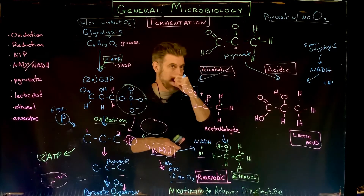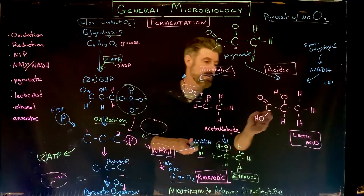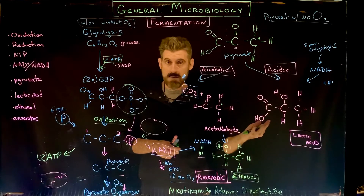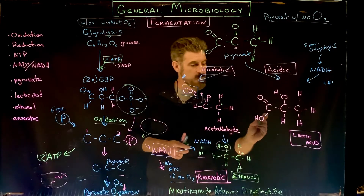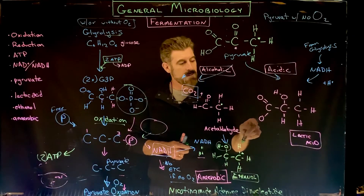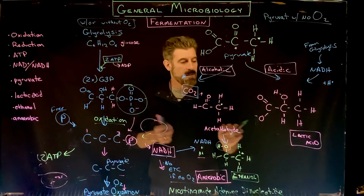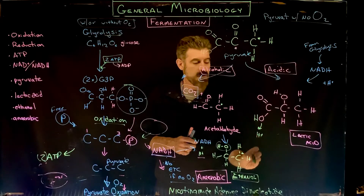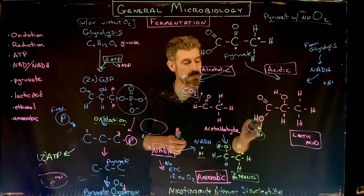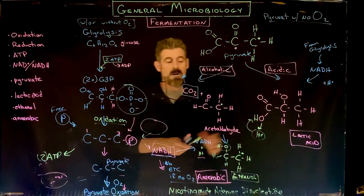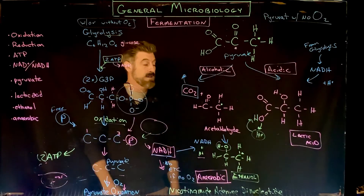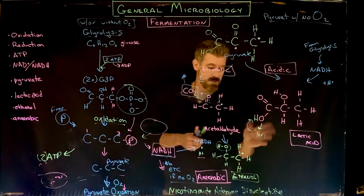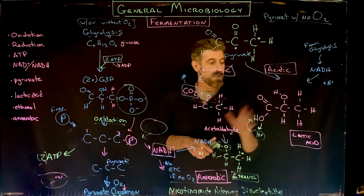It's called an acid because carboxyl groups act as weak acids - they are also called carboxylic acids. This group can give up a proton to solution, which means it acts as an acid, or it can bring it back and hold on to it. Pyruvate is also called pyruvic acid for the same reason. I'm drawing it in the non-ionized form because it's a little bit easier to track everything, but in solution it will often be ionized.